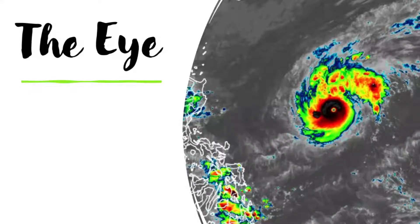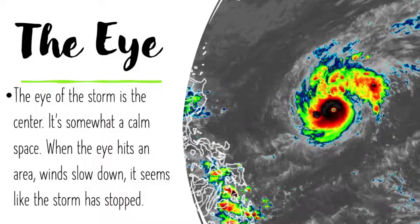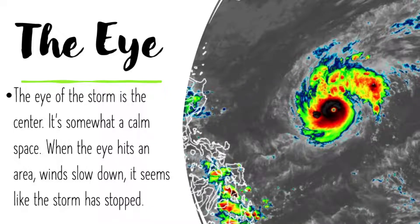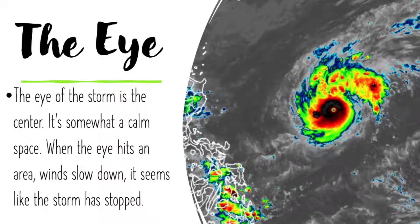Another term is the eye, which is one of the parts of a tropical cyclone. The eye of the storm is the center — it is somewhat a calm space. When the eye hits an area, winds slow down and it seems like the storm has stopped. The eye of a tropical cyclone serves as the center and indicates the location of the tropical cyclone.